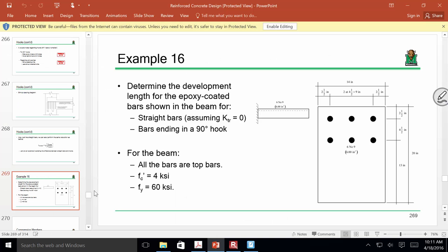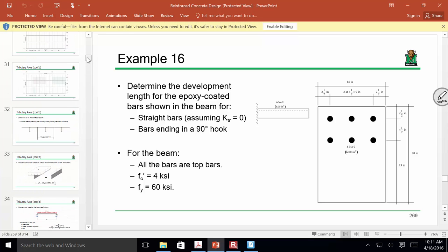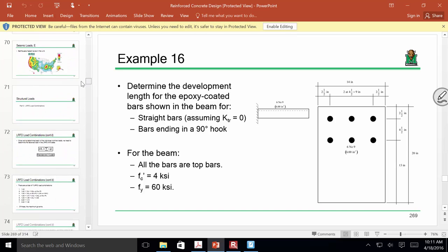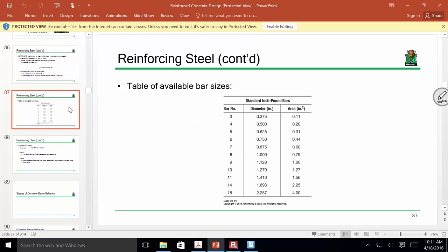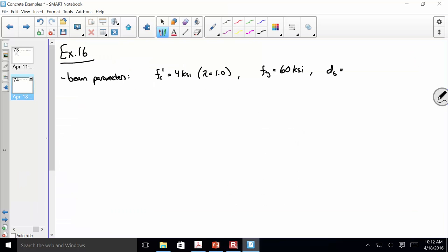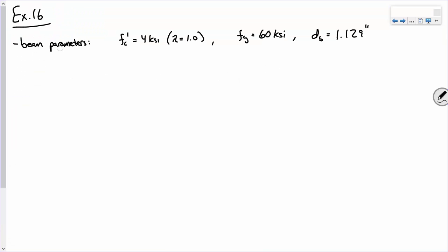All the bars are top bars. You have 4 KSI, 60 KSI, and what have you. I think that should be good to go. Any questions? Okay. So, we've got normal weight concrete with a compressive strength of 4 KSI. We've got 60 KSI bars. What's the diameter of those bars?